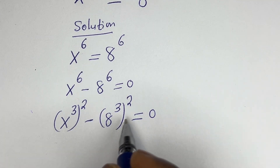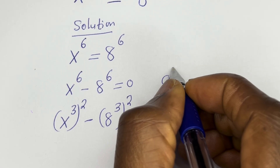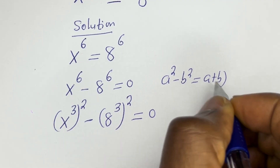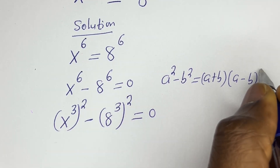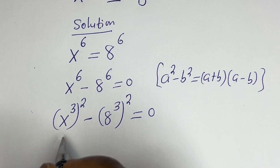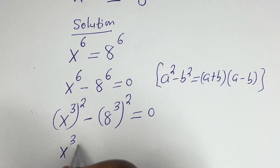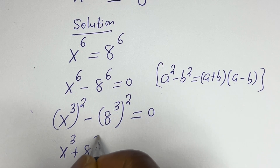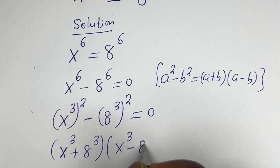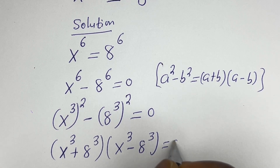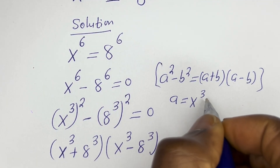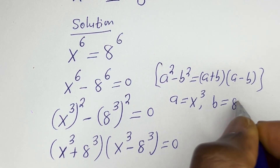This is in the form of a perfect square difference, that is, if you have a squared minus b squared, this is equal to (a plus b)(a minus b). So this can be rewritten as (s to the power of 3 plus 8 to the power of 3)(s to the power of 3 minus 8 to the power of 3) is equal to 0, where a equals s to the power of 3 and b equals 8 to the power of 3.